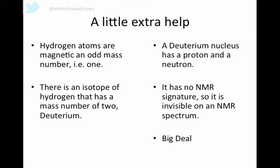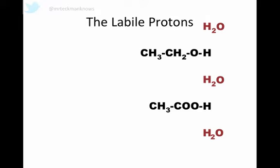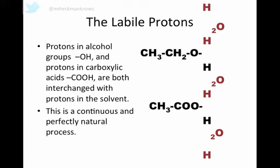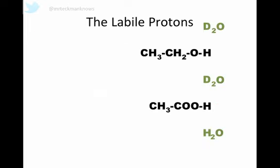Big deal, you might think. Well, this really helps us when we're trying to find out if a peak in our NMR is due to a hydrogen that's bonded to an oxygen, either an alcohol or a carboxylic acid. The protons in alcohol and carboxylic acid groups are constantly being interchanged with protons in the solvents. They're swapping in and swapping out, continuously and very naturally.